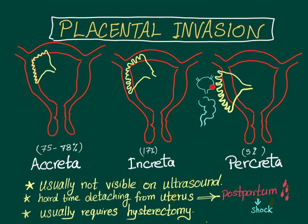In placenta percreta, the placenta may also extend to the wall of the urinary bladder or the rectum — this is bad. There is a very good way to remember these types: placenta accreta — the placenta attaches.